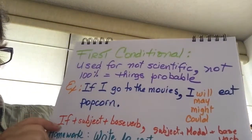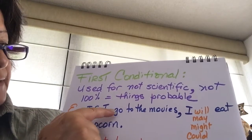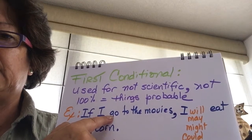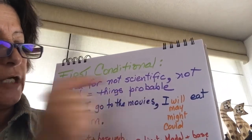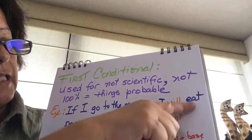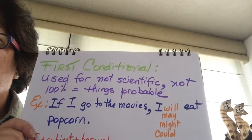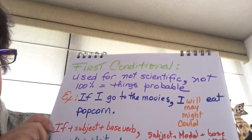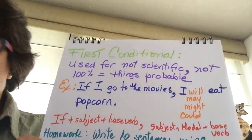The formula for the first conditional is: 'if' plus the subject plus the base verb — up to here it is the same as the zero conditional. What changes is the second part: we have the subject, the modal, and the base verb. Remember that in conditionals we always separate the two clauses with a comma. Here you have the formula.